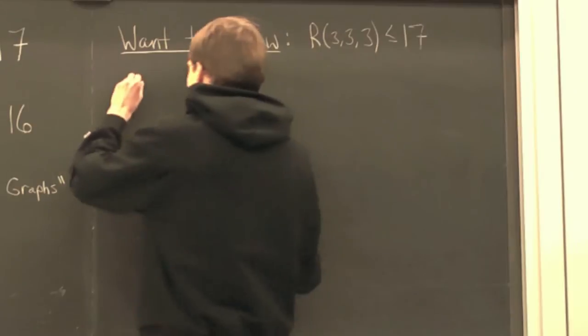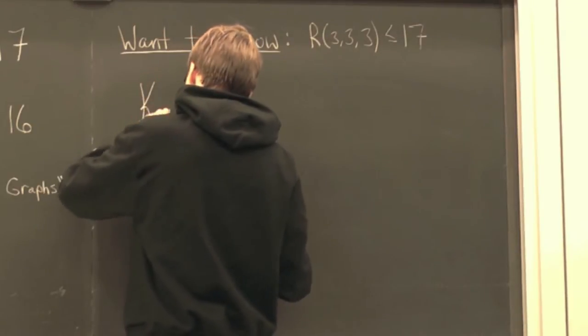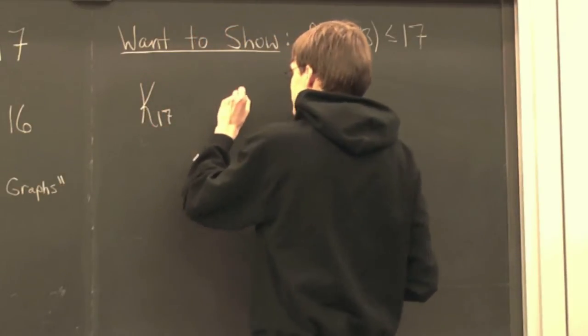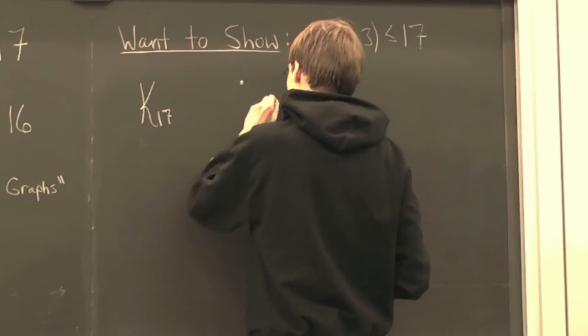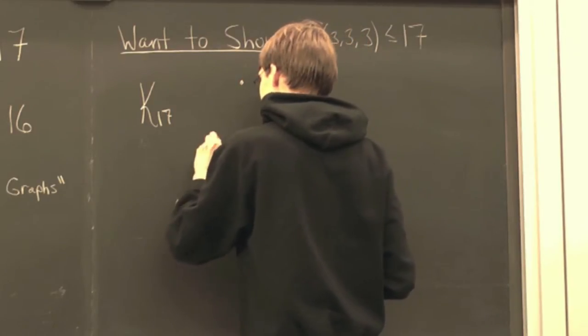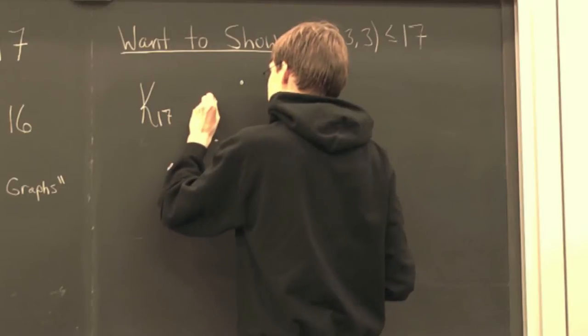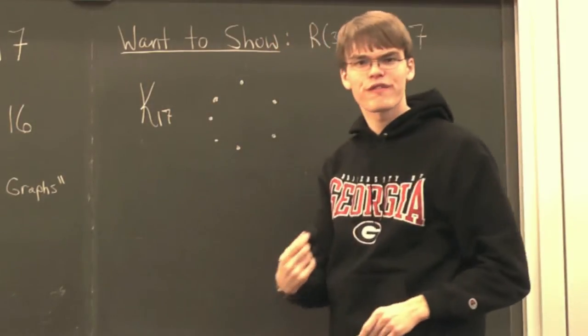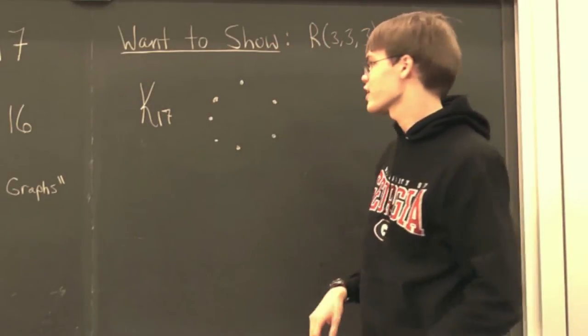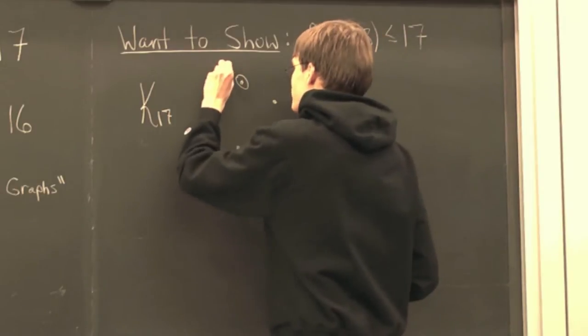So let us consider the complete graph on 17 vertices, K17. And so, as usual, we will arrange our vertices cyclically. So we have 17 vertices. Now, I want to focus on a specific vertex. Let's just choose this one, call it V.